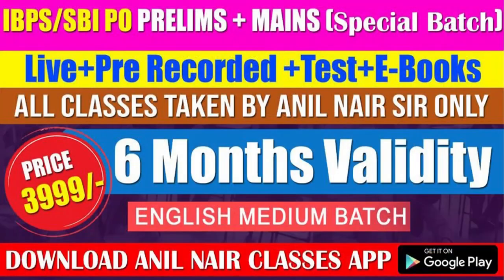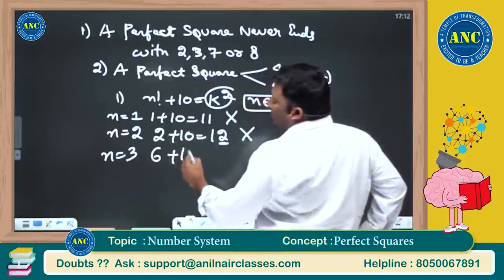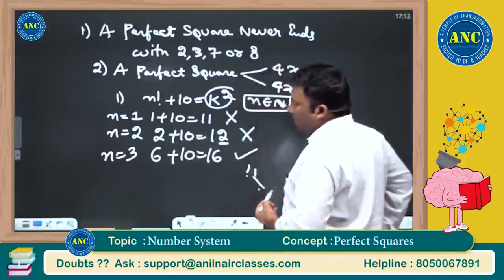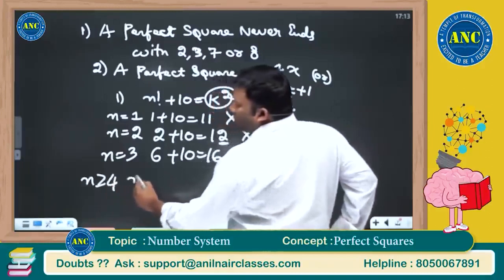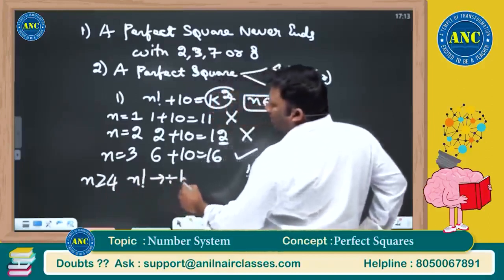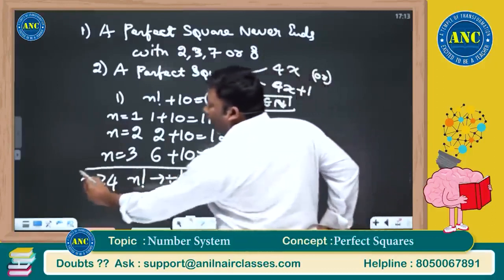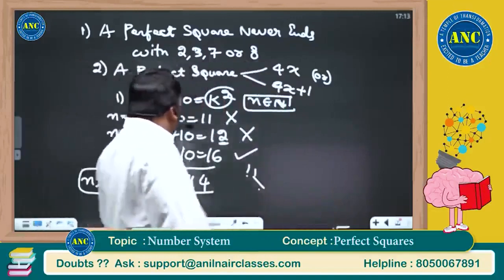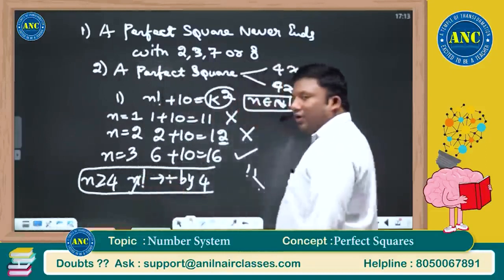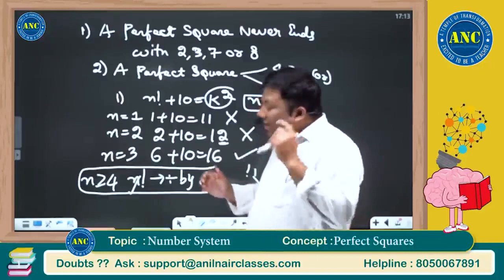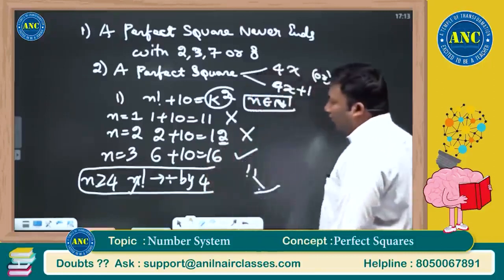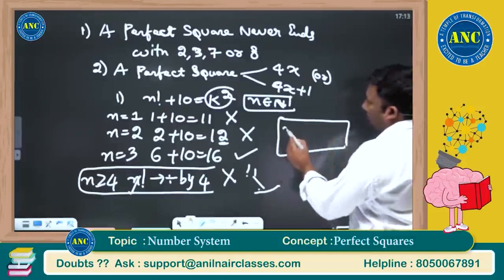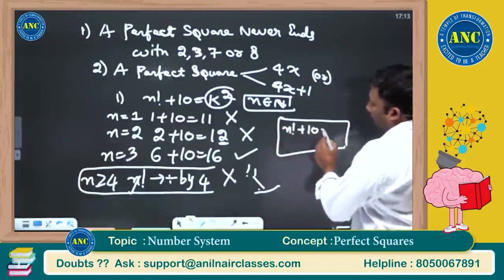For n=3: 3 factorial is 6, and 6 plus 10 equals 16. 16 is a perfect square — it is 4 squared. Now, for n greater than or equal to 4, n factorial is always divisible by 4. 4 factorial is 4 times 3 times 2 times 1, which is divisible by 4. 5 factorial is 5 times 4 factorial, 6 factorial is 6 times 5 times 4 factorial — so from 4 factorial onwards, all values are divisible by 4.